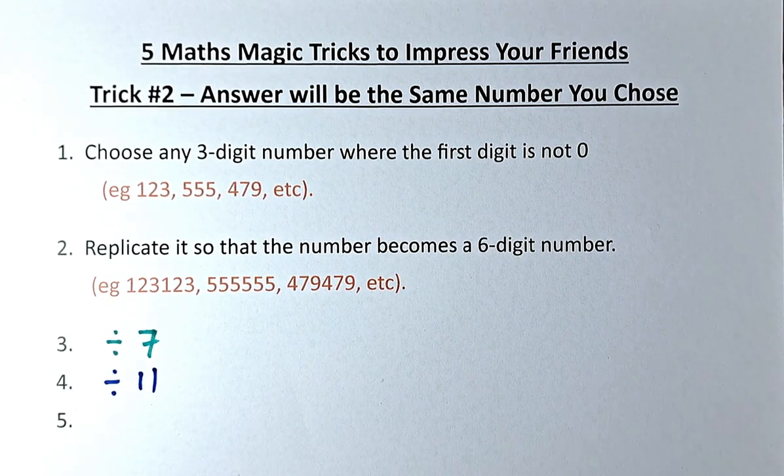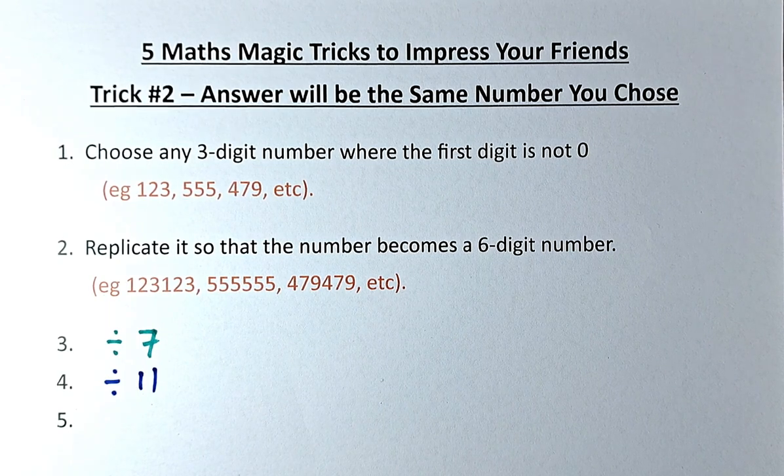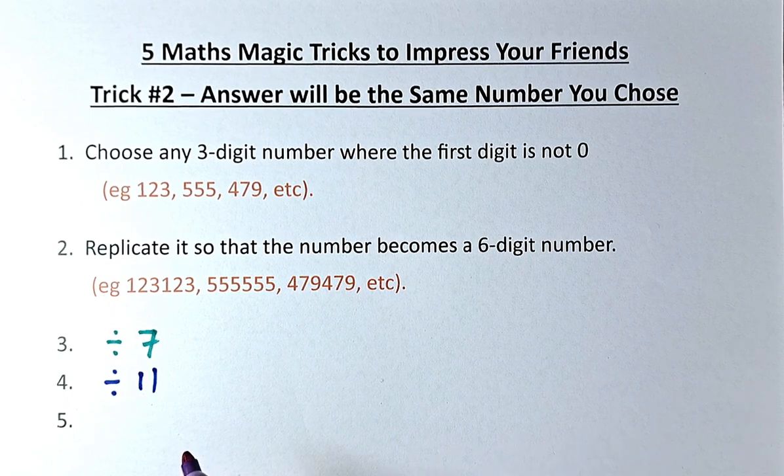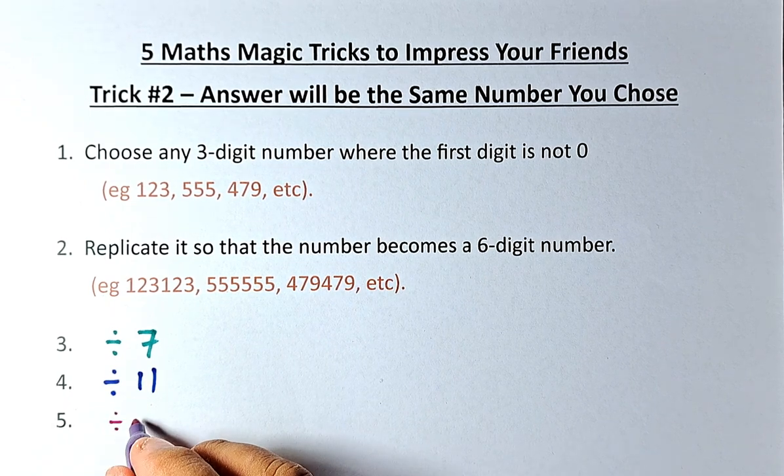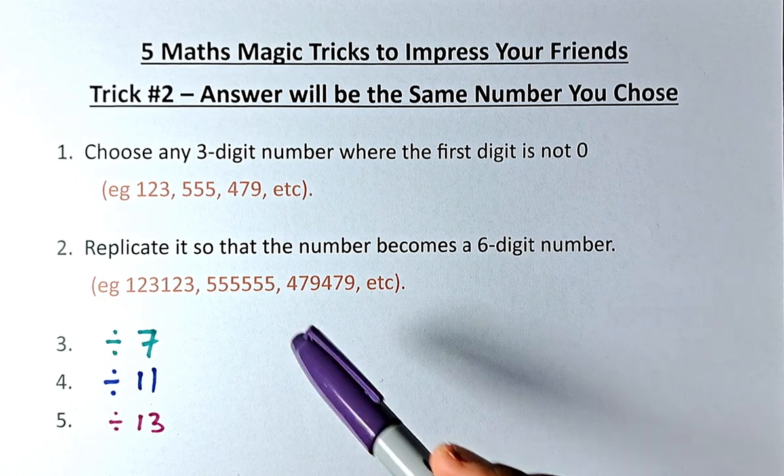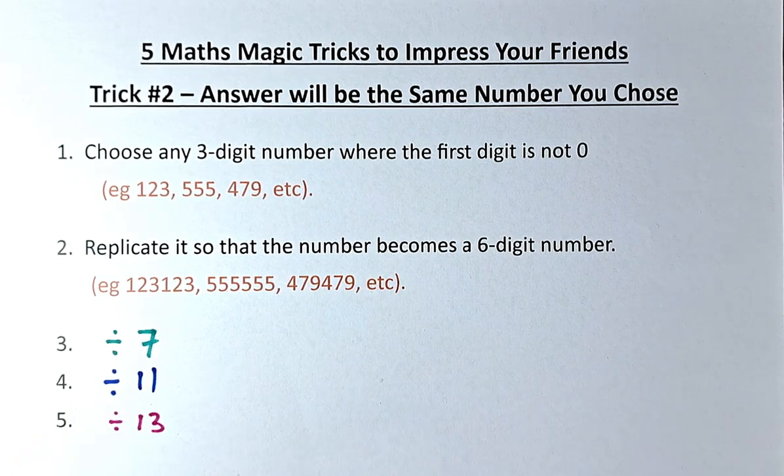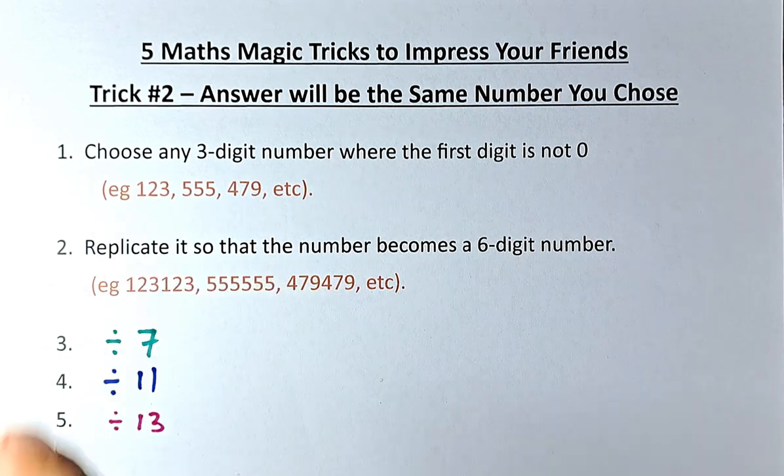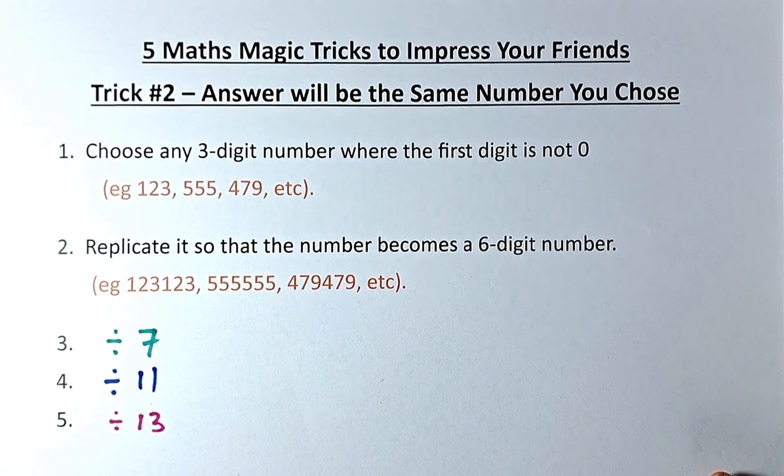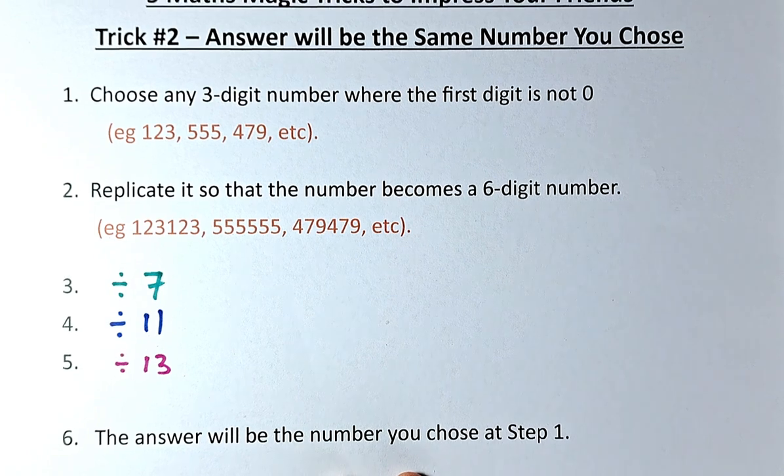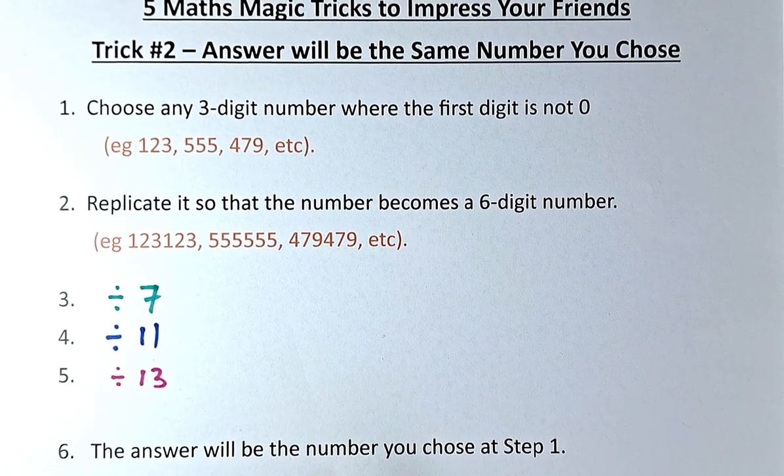And last but not least, in step number five, you are going to divide by another prime number, this time divide by 13. And surprisingly, if you take this number and divide by 7, 11, and 13, you will get the number that you have chosen at the start of step number one. Please tell me whether I'm right because the answer is going to be the number that you have chosen in step number one.